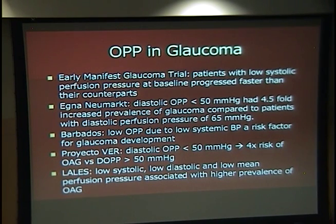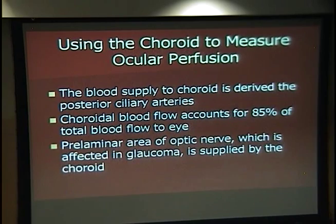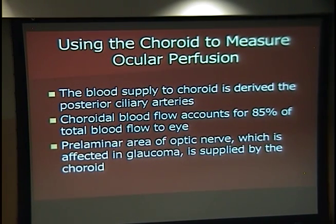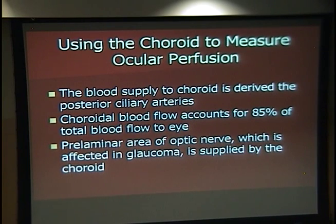These were some of the bigger studies that have been done. Since ocular perfusion pressure is really an estimate, how can we actually measure ocular perfusion in the eye? My interest has particularly been in the choroid. The choroid derives its blood supply from the posterior ciliary arteries and accounts for the vast majority of blood flow to the eye — it's one of the most vascular areas in the entire human body. It actually supplies the prelaminar area of the optic nerve, which has been implicated in glaucoma.